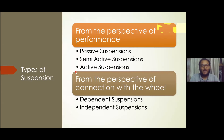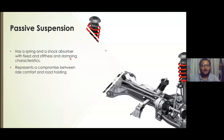Now coming to the types of suspension. We can view them from different perspectives. From the perspective of performance, we have passive suspensions, semi-active suspensions, and active suspensions. From the perspective of connection with the wheel, we have dependent and independent suspensions. Passive suspension is the simplest type — it has springs and shock absorbers with no complex or electronic devices, which leads to a compromise between ride comfort and road-holding capacity.